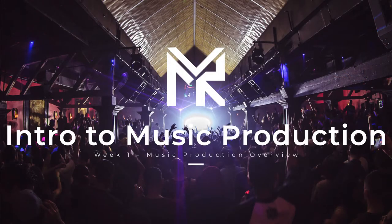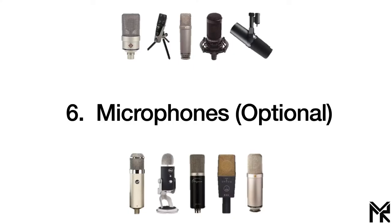Hey everybody, this is Meyer and in this video I'm going to talk about microphones — what are the different types, what are recommended for studio use, and what to look for when buying one. Microphones are optional because unless you're actually planning on recording yourself at home, you probably won't need one. But nowadays more and more people are recording from home and want their own home studio, so that's when people decide to get a microphone.